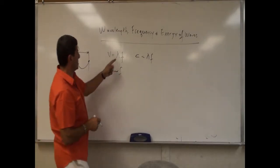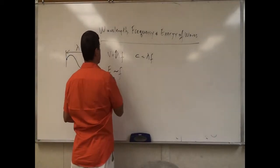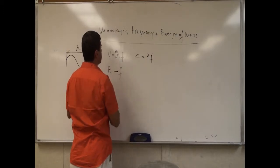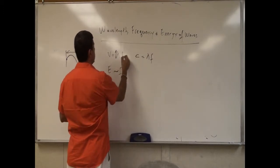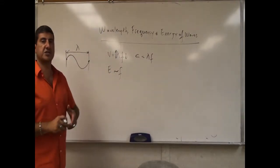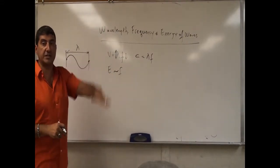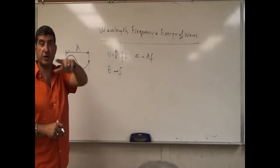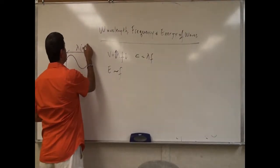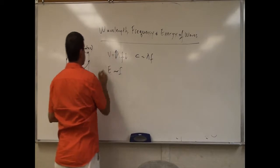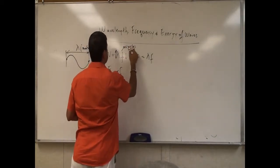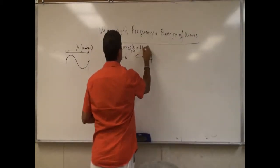When the wavelength is large, since the product of wavelength and frequency is velocity, the frequency is low — meaning the wave does not oscillate up and down very quickly. The wavelength is measured in meters, and the frequency is measured in cycles per second, which is also hertz.